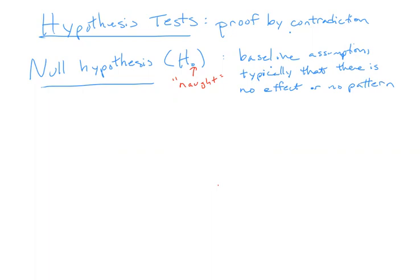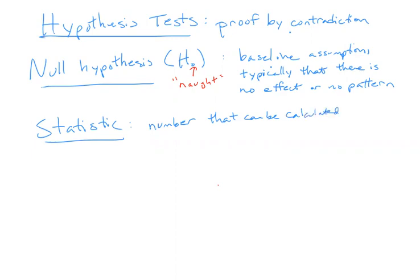Once we make that assumption, how do we decide whether it seems possibly true? We need some way to summarize the data. A statistic is a number that you can calculate based on data — it's a number that you know if you have a data set. This term is not specific to hypothesis tests; anytime you're talking about a number that can be calculated from data, that is called a statistic. Examples of statistics are means, medians, differences in means, ratio of means, ratios of medians, maxima, minima, 75th percentiles, ratio of 75th percentiles in two groups — anything you could actually calculate from your data. The next term is test statistic, which is a statistic that you use for your hypothesis test — the statistic used to evaluate your null hypothesis.